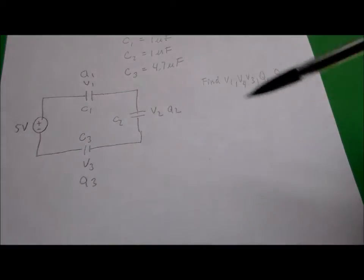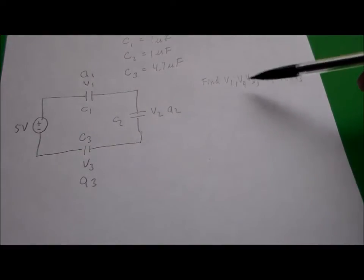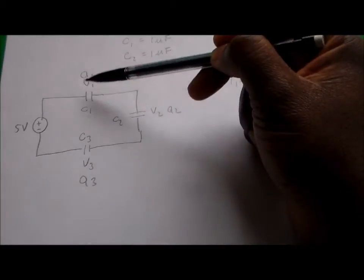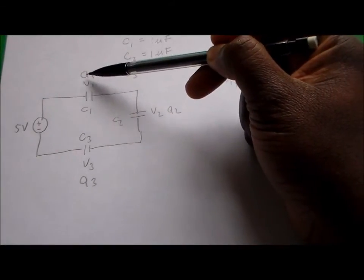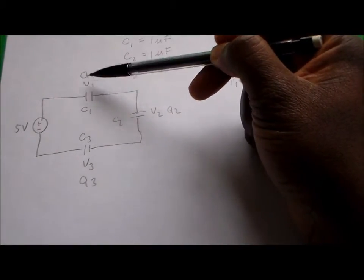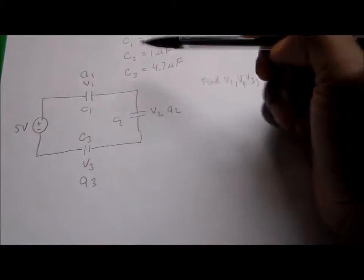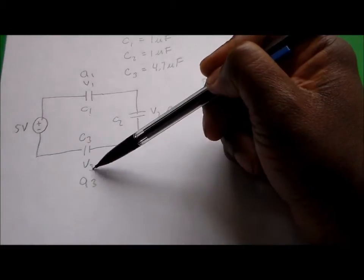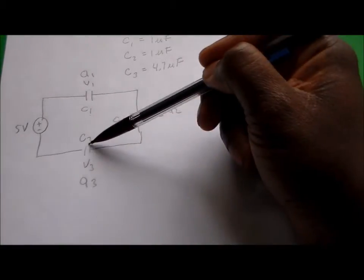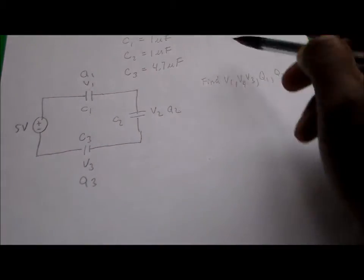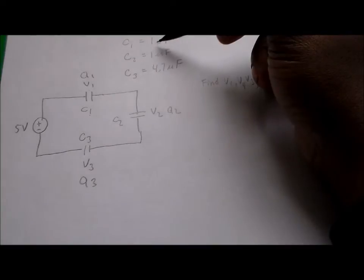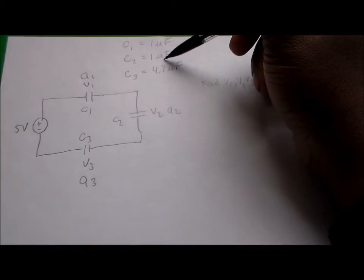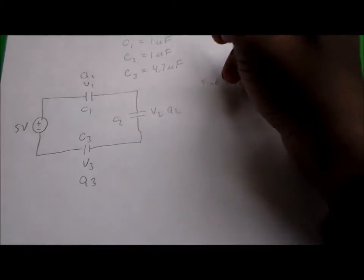In this problem, you're asked to find V1, V2, V3, Q1, Q2, Q3. V1 and Q1 are both across C1, V2 and Q2 are both across C2, and Q3 and V3 are across C3. Your capacitor values are one microfarad for C1, one microfarad for C2, and 4.7 microfarad for C3.